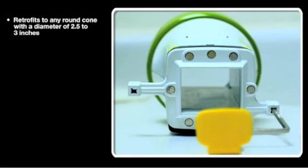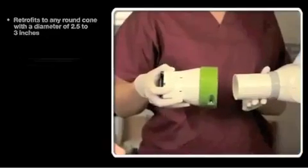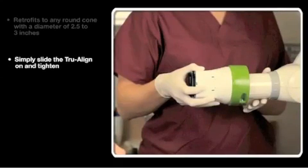TruAlign retrofits to any round cone with a diameter of 2.5 to 3 inches. There's no need to remove the existing cone. Simply slide the TruAlign on and tighten. It literally installs in seconds.